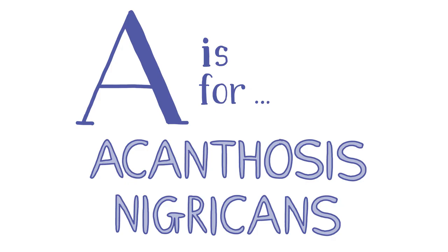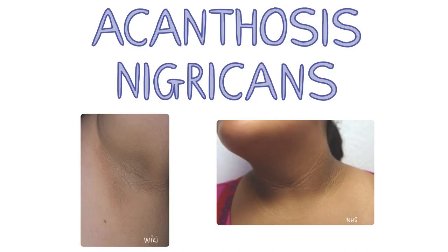A is for acanthosis nigricans. In acanthosis nigricans there is hyperpigmentation or darkening and hyperkeratosis or thickening of the skin. This results in symmetrical dark plaques commonly found in the folds of the skin at the axilla, but also around the neck and groin. It may also be associated with pruritus, papillomatosis and skin tags.